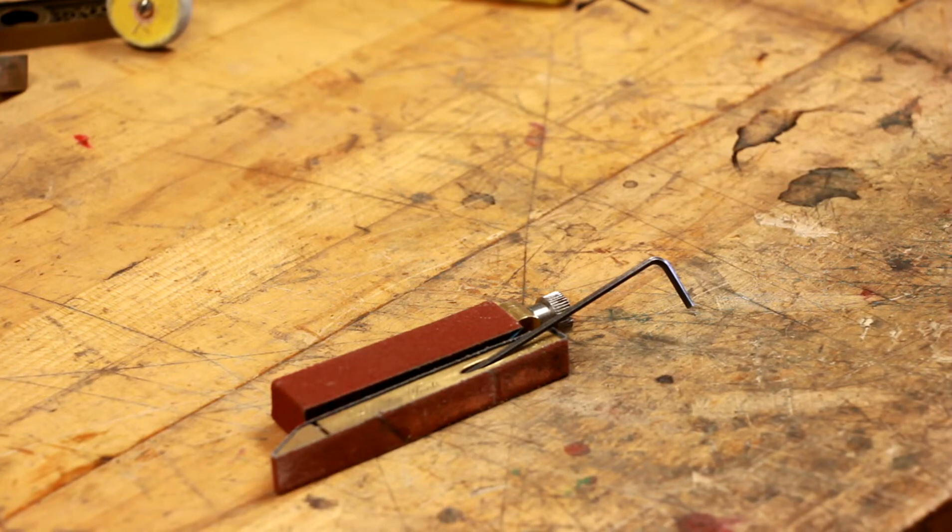As the belt wears, it's always exposing new fresh abrasive spears. And because all the spears are the same height, it's virtually impossible to have a stray grit that makes a deeper cut than you want, and you have to keep removing material to get rid of that deep cut.